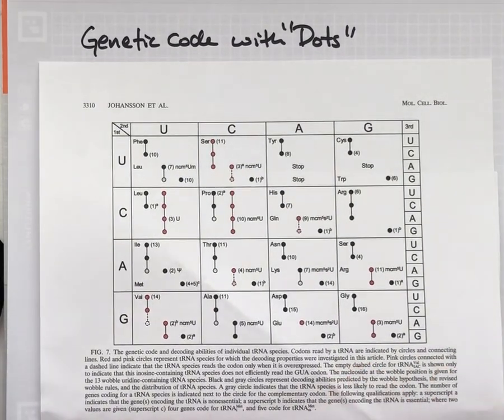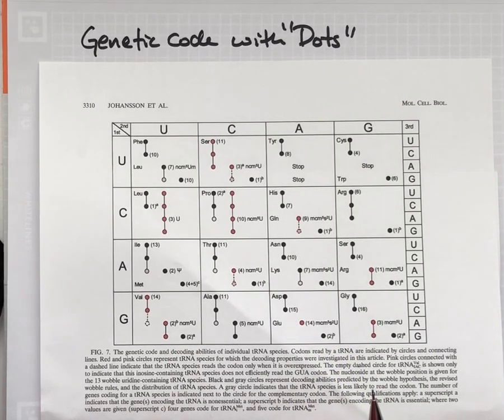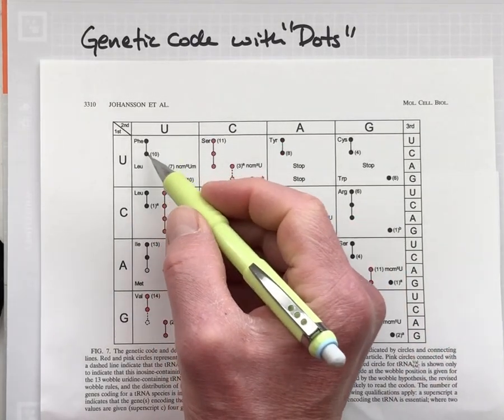So to try to convey the sense that the codon table is really a collection of tRNAs, I prefer to use this version of the genetic code that we call the genetic code with dots.